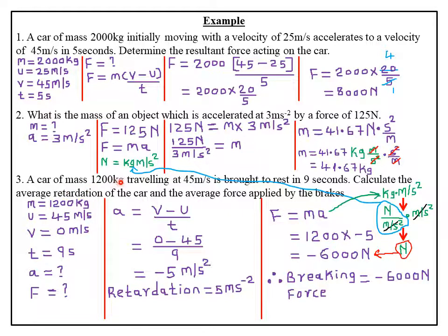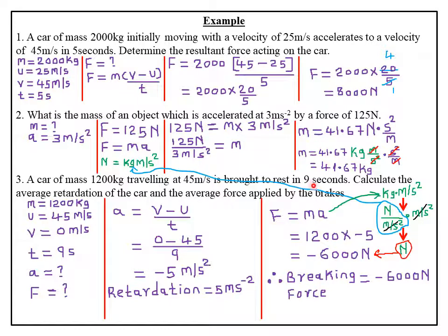Our next example reads that a car of mass 1,200 kg traveling at 45 meters per second is brought to rest in nine seconds. Calculate the average retardation of the car and the average force applied by the brakes. Highlighting given quantities: mass M is 1,200 kg, initial velocity U is 45 meters per second. Brought to rest means the final velocity V is zero meters per second. In nine seconds, so time T is nine seconds.